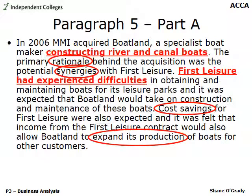Paragraph five has great examples of type one information — the examiner gives it to you in black and white. Moving to the Boatland section of the answer, the highlighted red text emphasizes that this is another unrelated diversification. Importantly, the examiner even uses the word 'rationale' in the text — so for the first part of the question asking you to explain the rationale, it's handed to you. You just return it under the appropriate heading.